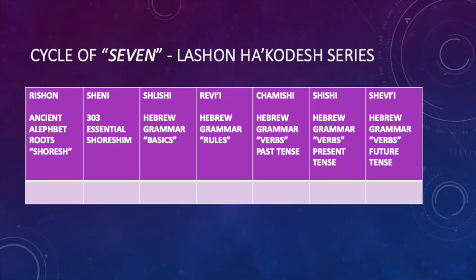What we're trying to accomplish is what I call the Lashon Hakodesh series, which is a cycle of seven. It covers ancient Hebrew roots — the Shoreshem. I'm going to introduce you to 303 different Shoreshem which you're going to memorize. You'll learn the basis of grammar, the rules, verbs in present tense, past tense, and future tense. The goal is to familiarize you with the language so you can understand the Torah.